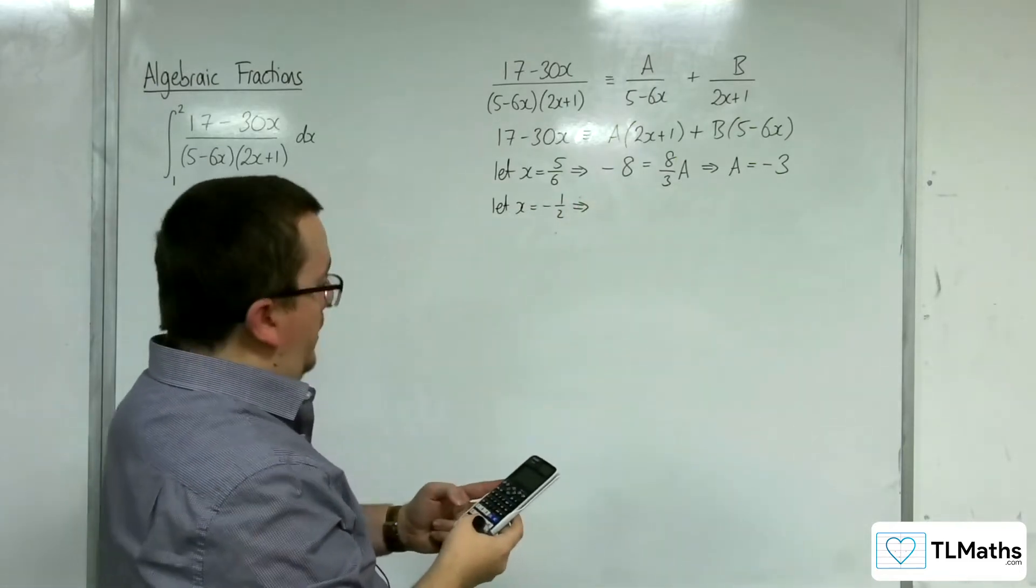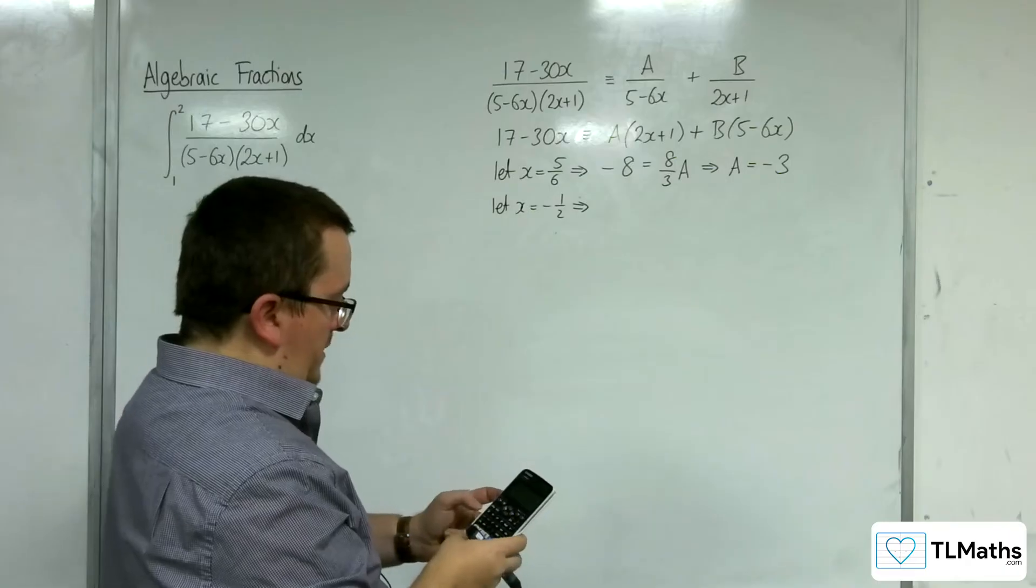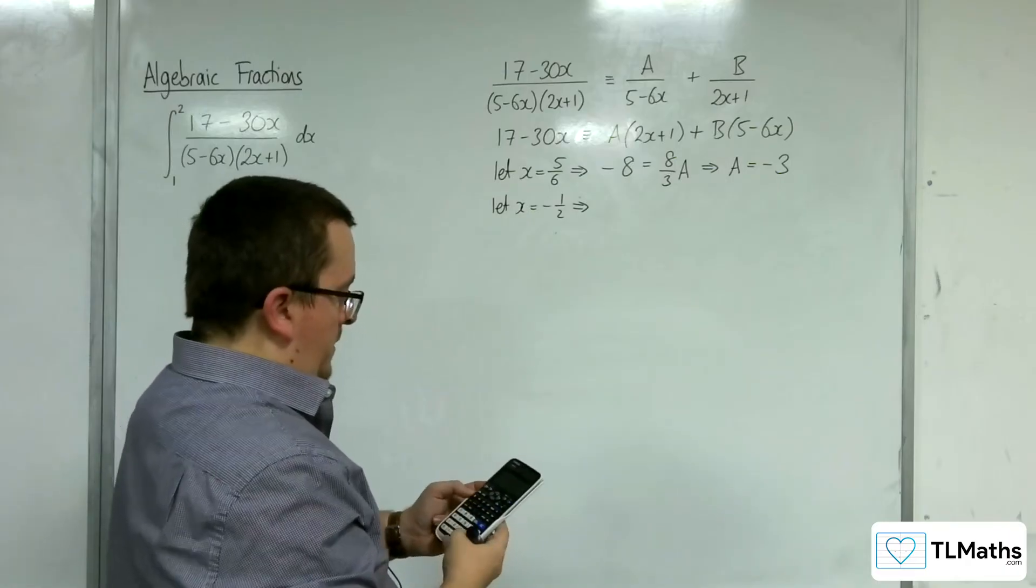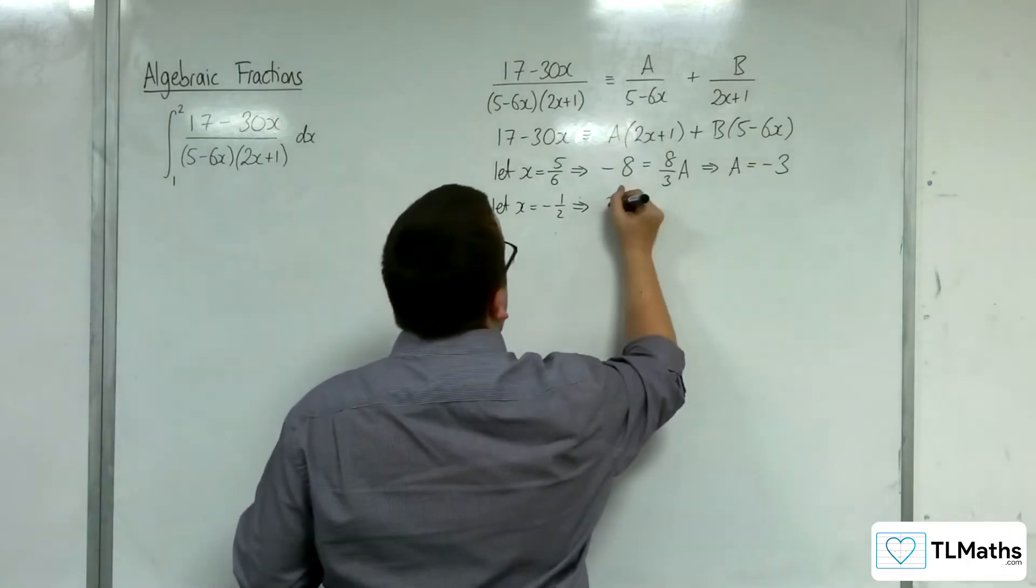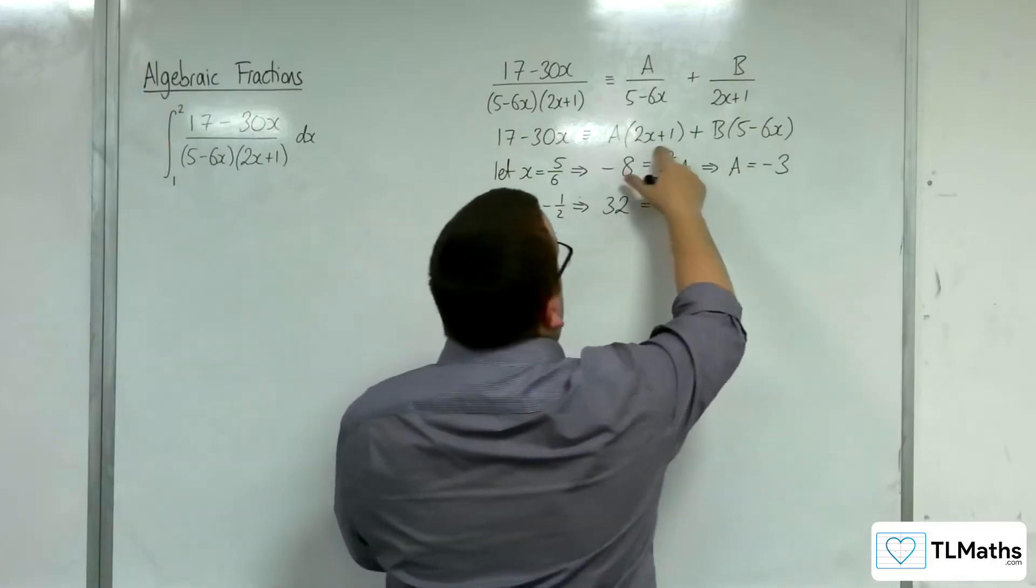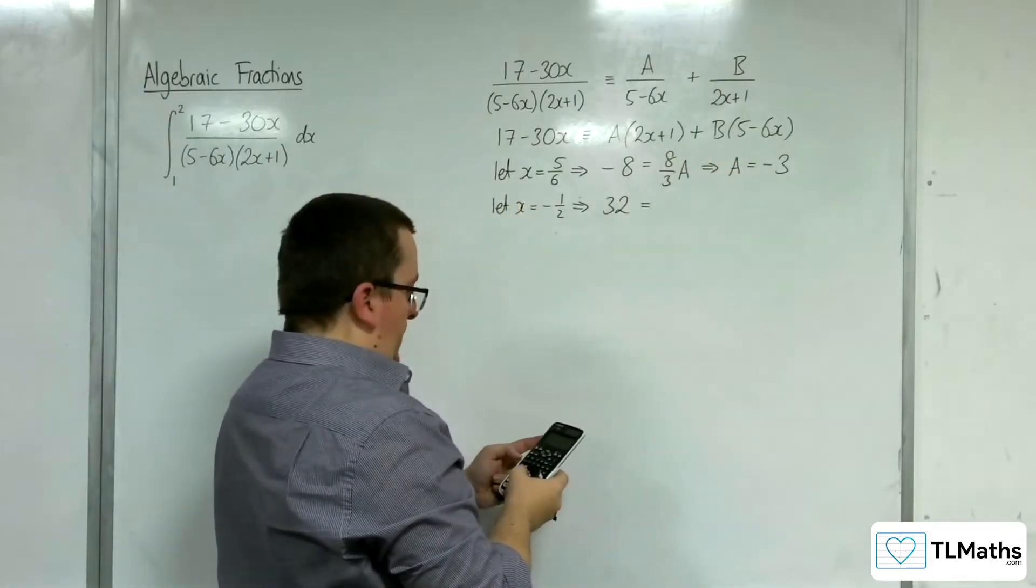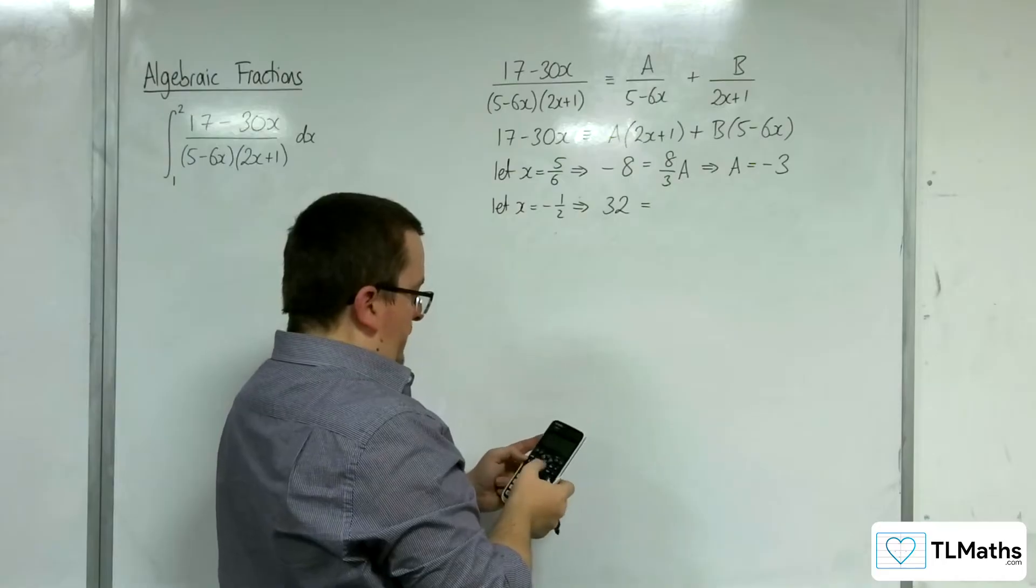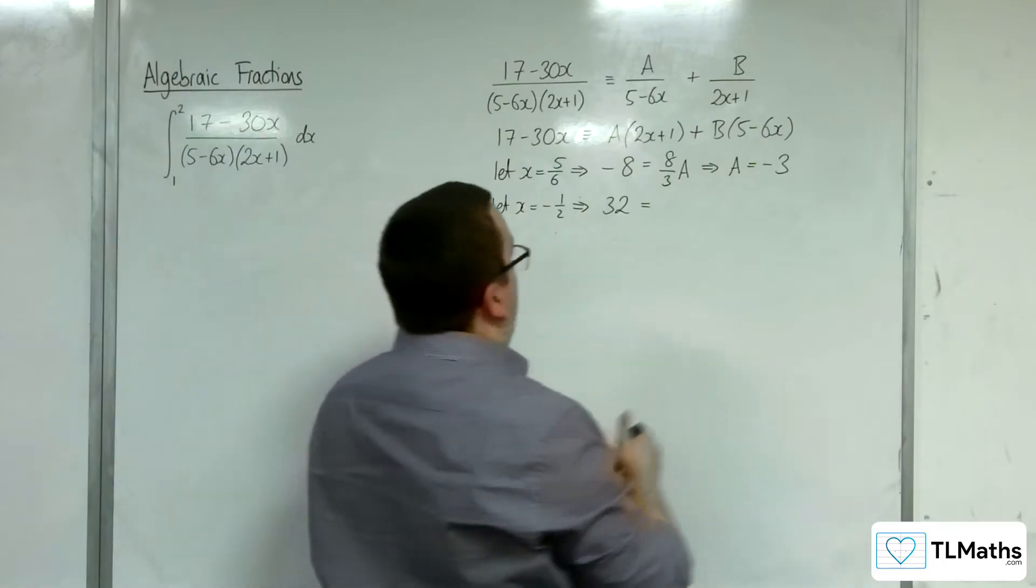So, substituting to the left-hand side, 17 take away 30 lots of minus 1 half is 32. That bracket's gone, so 5 take away 6 lots of minus 1 half is 8. So, 8b.